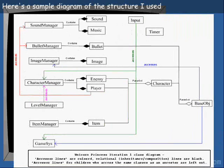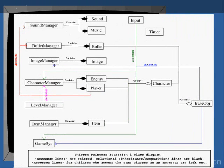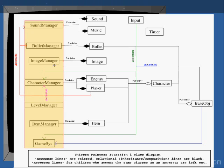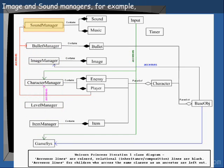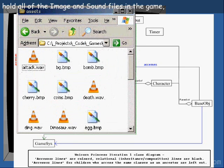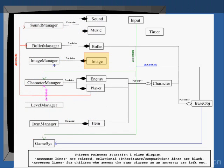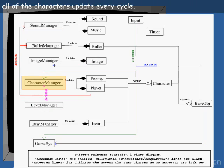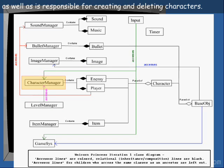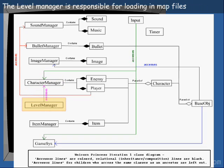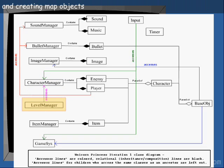Here's a sample diagram of the structure I used for Unicorn Princess. On the left side, I have my manager classes. The image and sound managers hold all of the image and sound files in the game, and act as intermediates between the game loop and the images. The character manager makes sure that all the characters update every cycle, as well as being responsible for creating and deleting characters. The level manager is responsible for loading in map files and creating map objects.